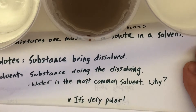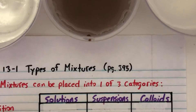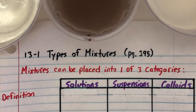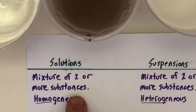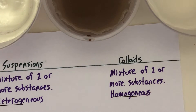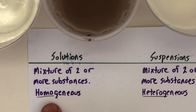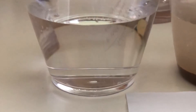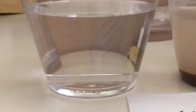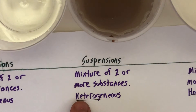Solutions are mixtures of two or more substances, and so are suspensions and colloids. The difference is how they actually look to our eyes. Solutions are homogeneous — that prefix means they look the same to our eyes. The solution on the left is salt water, and you can't tell that there's salt dissolved in there; it all looks like one substance.